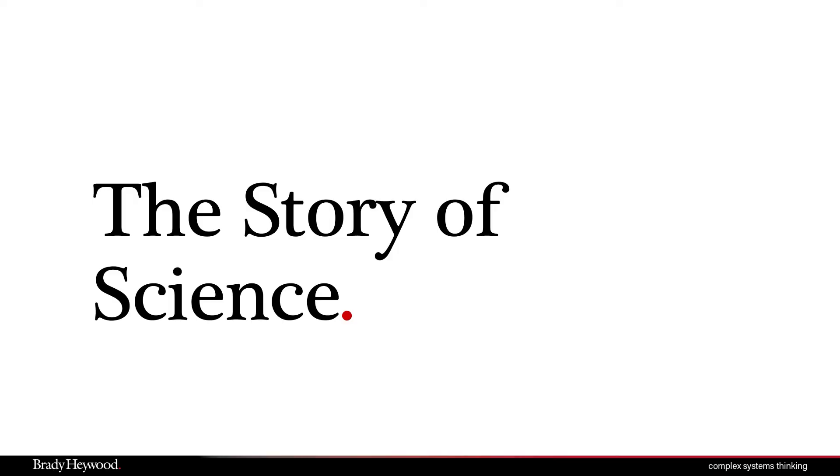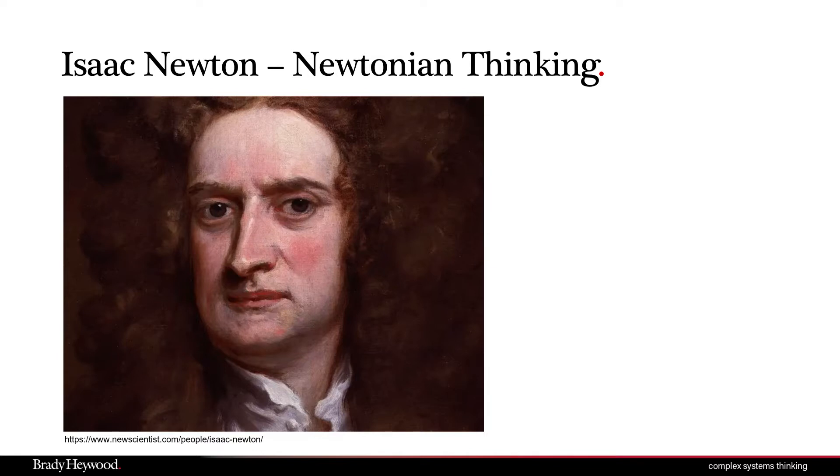To really understand how this all fits together, we have to take a step back and go to a tiny piece in the story of science that will help explain why we think the way we think — why complex systems thinking is sometimes very hard to get your head around, and how to free ourselves from the traditional way of thinking to start thinking in terms of complex systems. The best place to start this story is with someone we've already spoke about: Isaac Newton, because fundamentally he gave us Newtonian thinking, and most of us think in a Newtonian way.